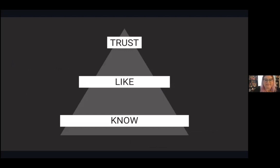A lot of the time people assume digital marketing equals posting content and then getting sales, but what it actually is is a little bit more complicated. Your audience is going to live in a constant hierarchy — know, like, trust. Step one is getting people to know you, which happens organically when they stumble upon your page. Generally, people say it takes five to seven times for somebody to see your content before they will engage with you.